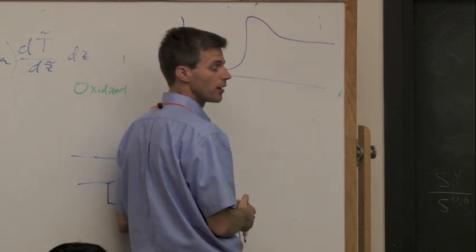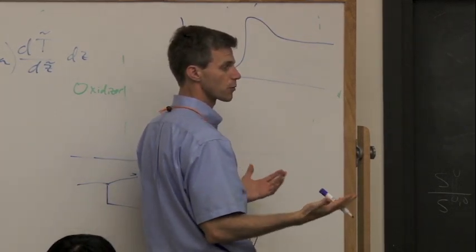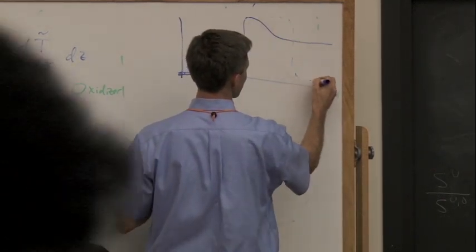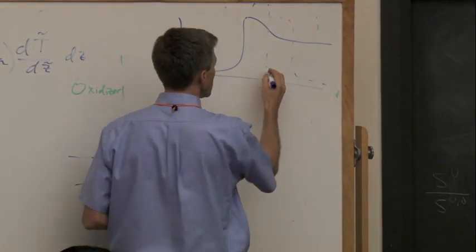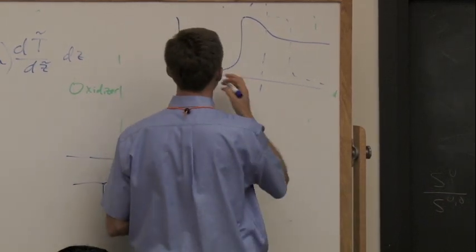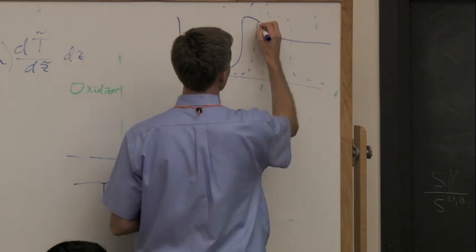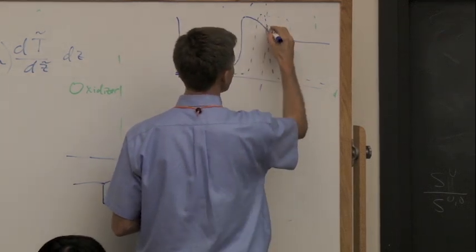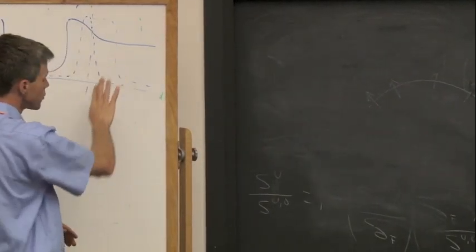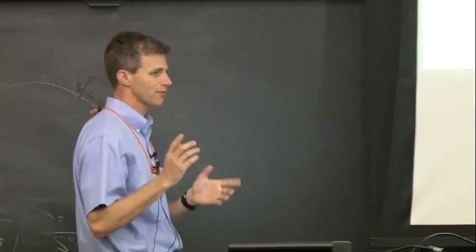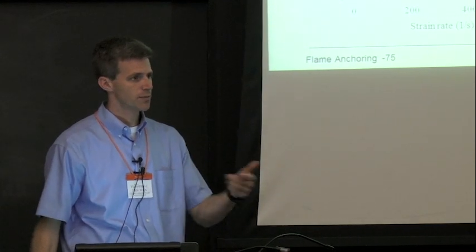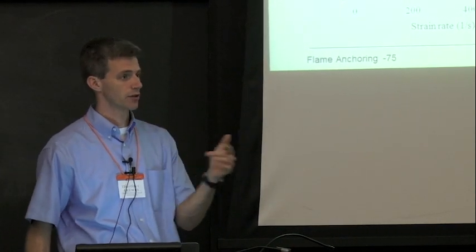So you're actually losing heat on the backside. But the other thing that's happening is that if you think about a symmetric configuration, the center line is adiabatic. But what also happens is if you were to plot something like an H radical, that would also look like this. And you're basically losing these critical radicals to the product side. I'm guessing that's probably what's happening there — you'd have to dig into what the different species profiles are. It's because it's not symmetric and you're losing stuff to the products.